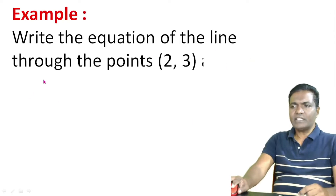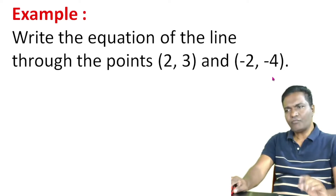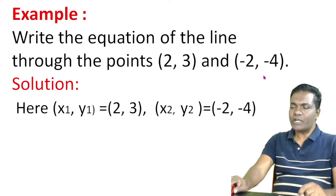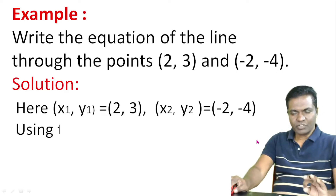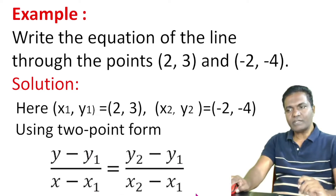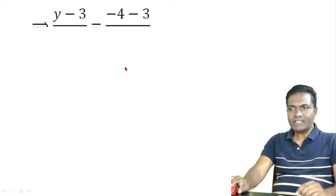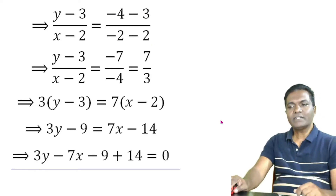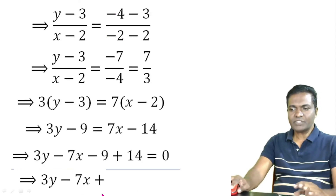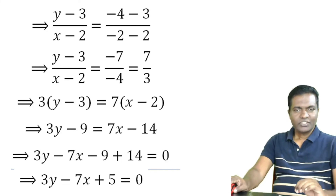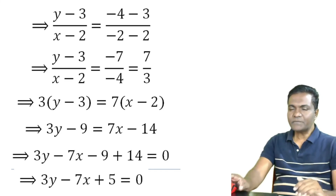Practice problem: write the equation of the line through the points (2, 3) and (-2, -4). Here x₁ = 2, y₁ = 3, x₂ = -2, y₂ = -4. Using the two-point form and substituting coordinates, you will get the equation 3y minus 7x plus 5 equal to 0. Keep studying and all the best!